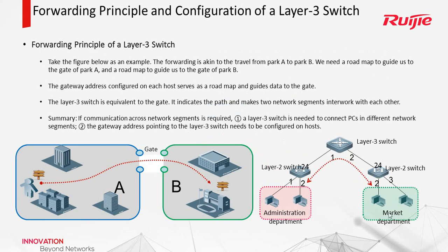We can think of these two departments as like two companies. So we need to go out of this company, then go into another company. This means we need to get out of this gate and then get in this gate. A layer 3 switch is needed to connect PCs in different network segments.